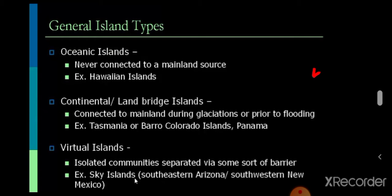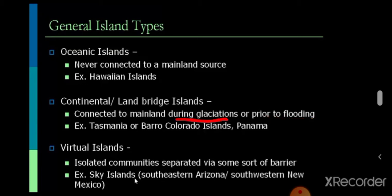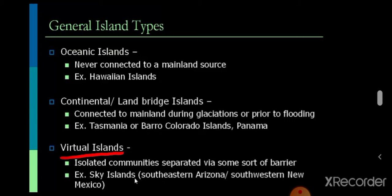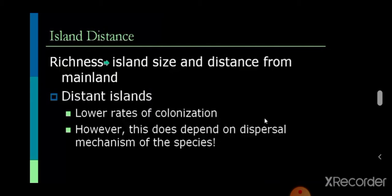We'll discuss the different types of islands. The first is the oceanic island, which was never connected to the mainland. The second is the continental or land bridge island, which was connected to the mainland during glaciation or prior to flooding — for example Tasmania or Barrow. The third is the virtual island — isolated communities separated by some sort of barrier, such as the sky islands of southeastern Arizona and southwestern New Mexico.